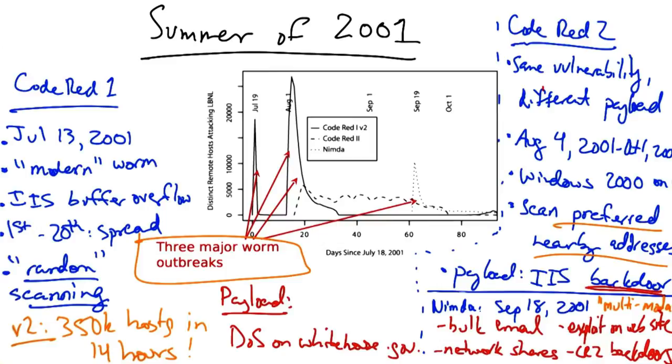The interesting thing about the multimodal nature of the Nimda worm is that signature-based defenses don't necessarily help because of the many ways that it could spread. For example, by email or via a website exploit, Nimda actually leaped firewalls. Most of the firewalls passed the emails carrying Nimda completely untouched.